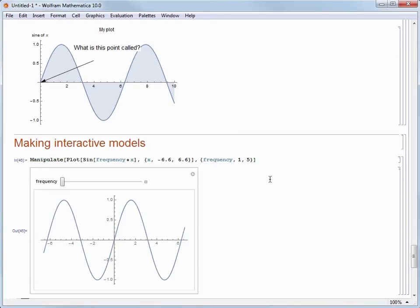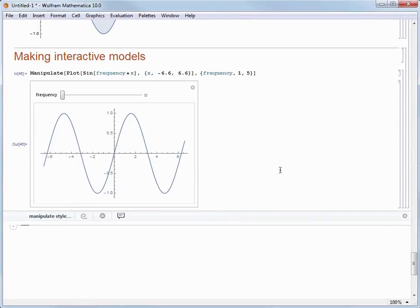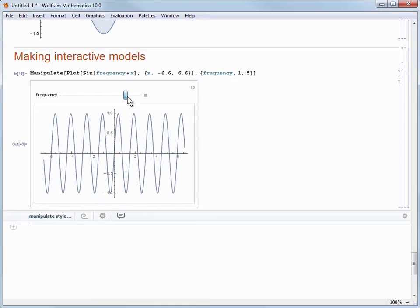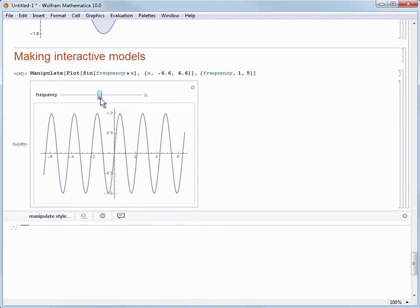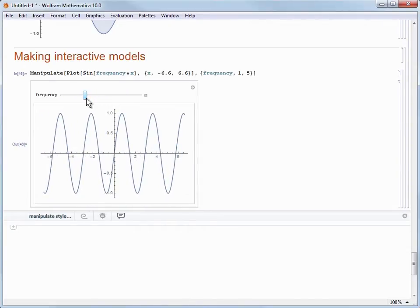Let's hit shift and enter together and we get a plot of the result, but we also get an interactive controller. In this case, it's a slider bar that is labeled frequency. And as we move that slider, we can see what happens as that value changes. Pretty impressive for something that was like 20 seconds of work once you cut out all of my talking.